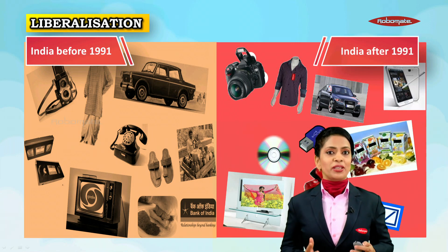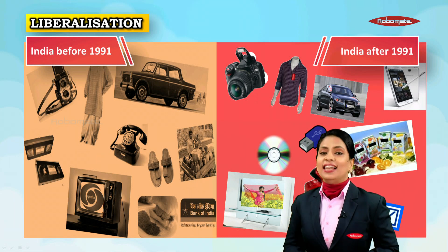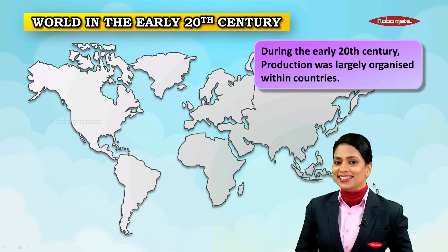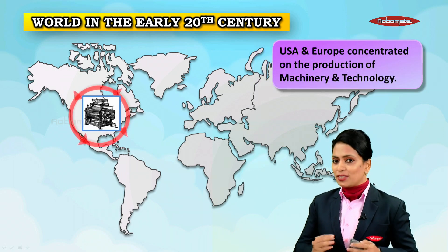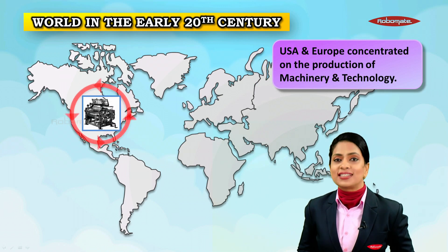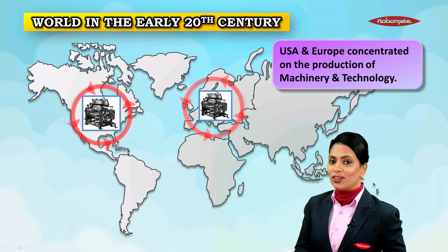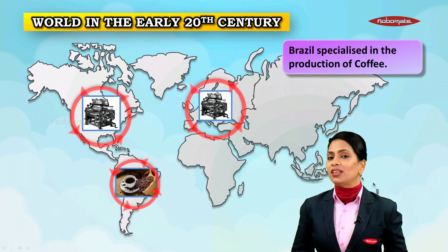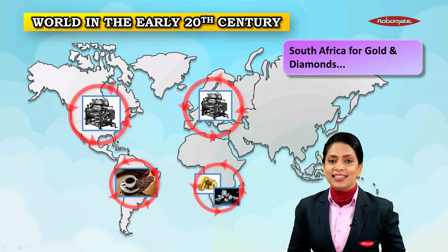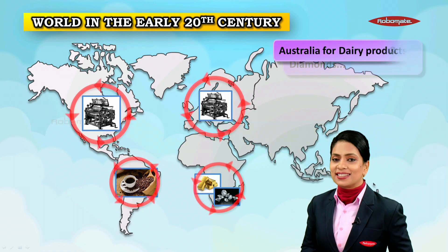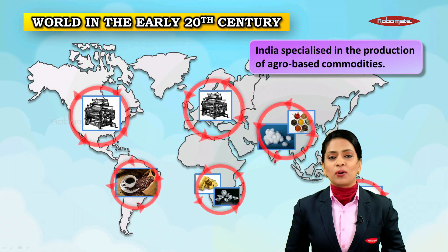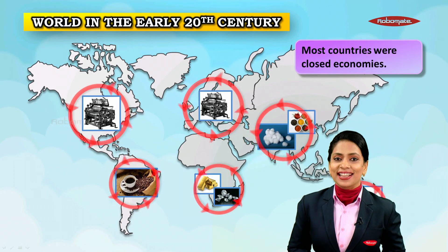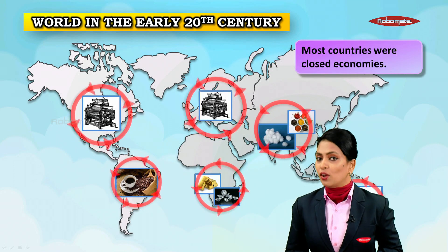What led to this transformation? Before we understand that, let us visit the early 20th century world and find out what the world economy was then. During the early 20th century, production was largely organized within countries. Countries like the USA and Europe concentrated on the production of machinery and technology. Countries like Brazil specialized in coffee, South Africa was well known for its gold and diamonds, Australia for its dairy products.